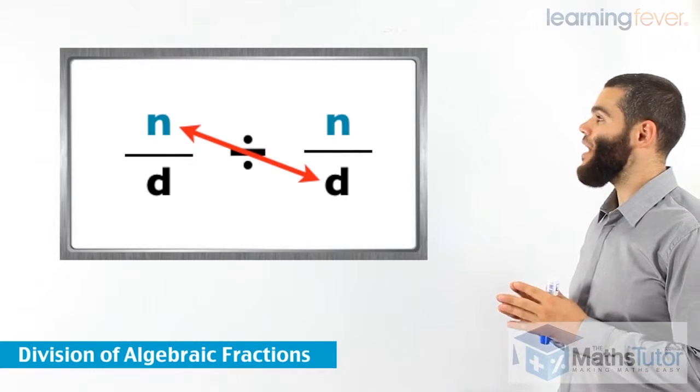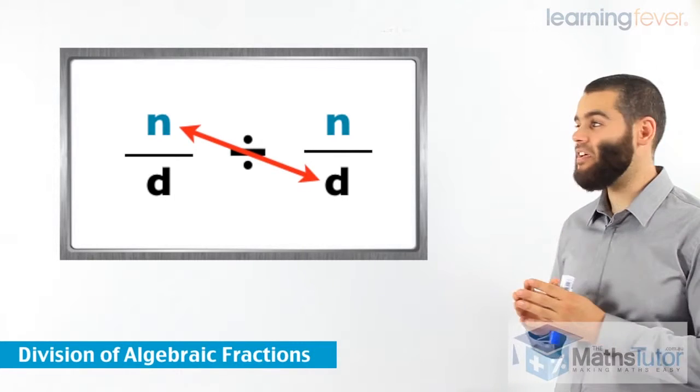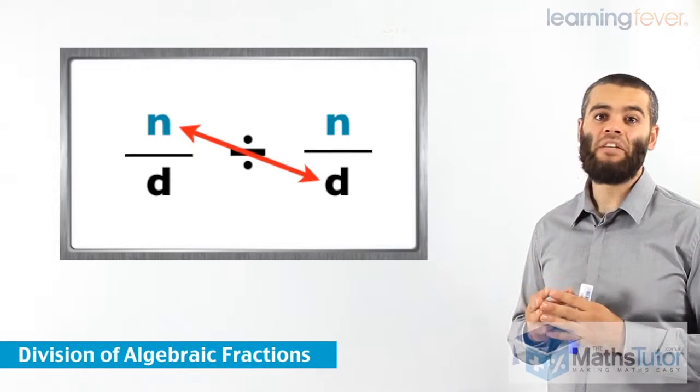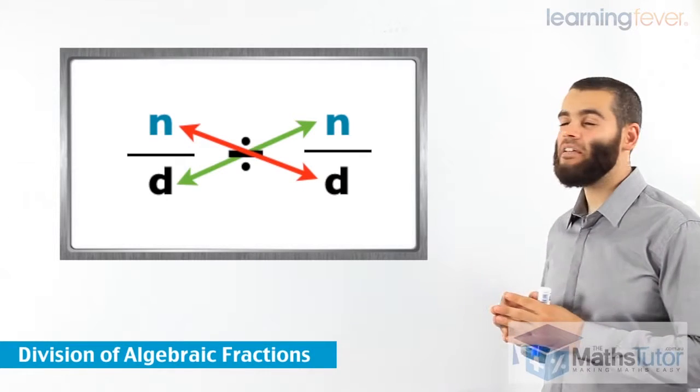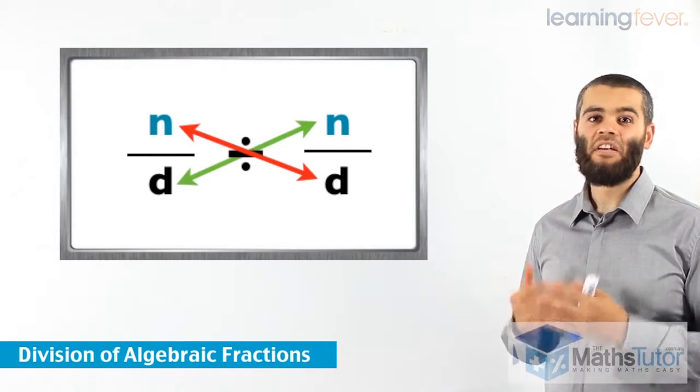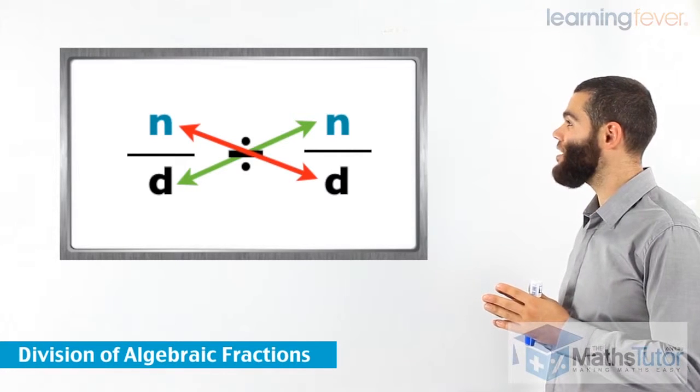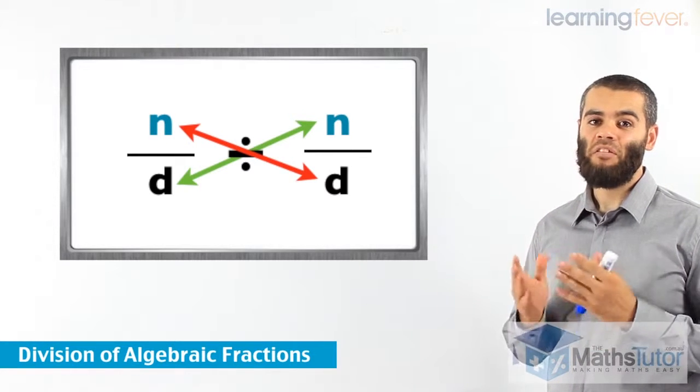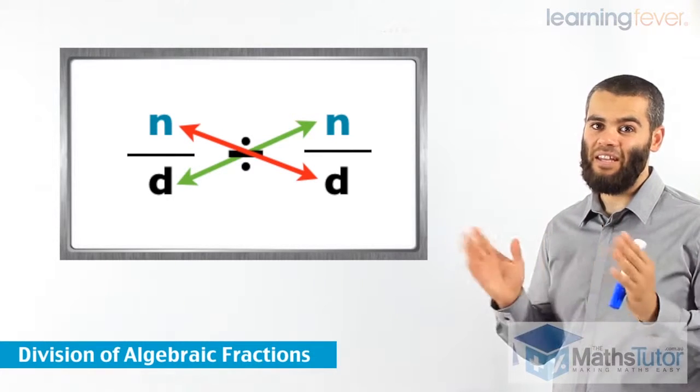We know that when we are dividing fractions, we follow this process. We multiply the first numerator with the second denominator, and we multiply the second numerator with the first denominator. Yes, that's all. Two steps. Multiply the first numerator with the second denominator, and then multiply the second numerator with the first denominator. It is that easy.